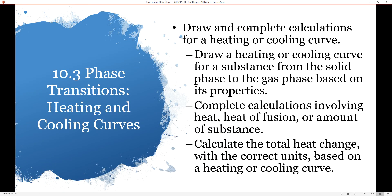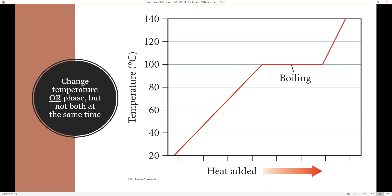Today we're going to look at how to put everything together that we know about heating substances to draw heating and cooling curves and calculate the total amount of energy involved. Earlier we talked about how we can change the temperature or the phase of a substance, but not both at the same time. I gave the example of overheating my mug of water when trying to make coffee — I can change the temperature or I can change the phase, but I can't do both at the same time.